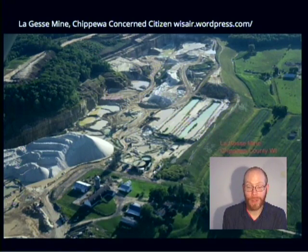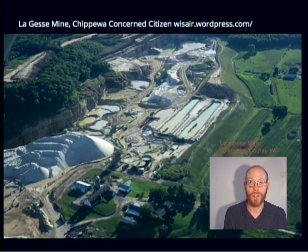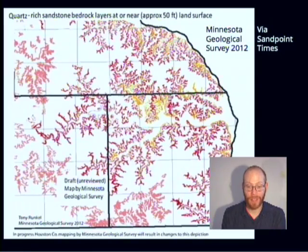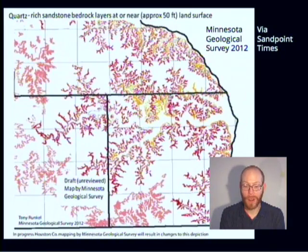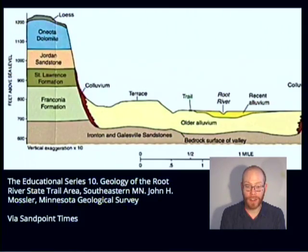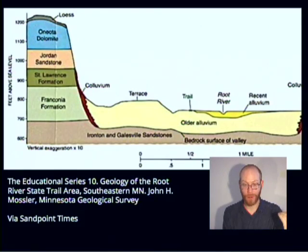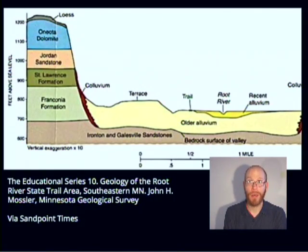Mines are being opened at a rapid pace in places where the sandstone is closest to the surface. This is primarily in the Mississippi River Valley and its tributaries, where the rivers have cut into the sandstone and exposed it to the surface. As you can see in this diagram, the river has cut down through the surface exposing multiple layers of sandstone, creating opportunities for pit mining.